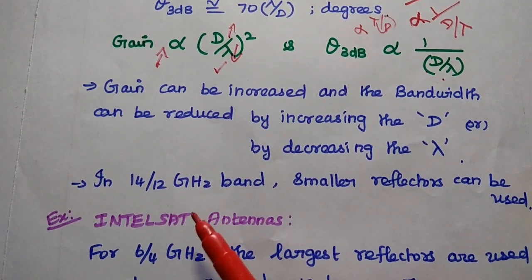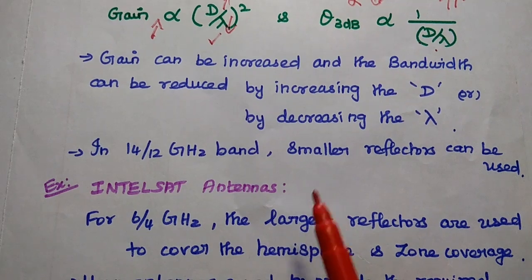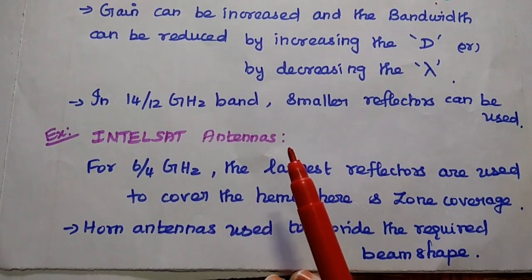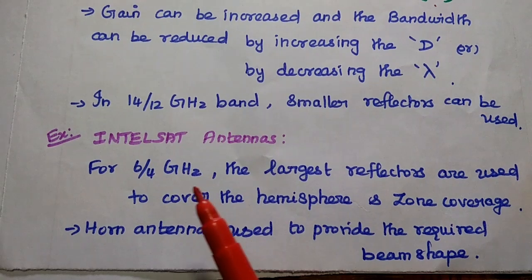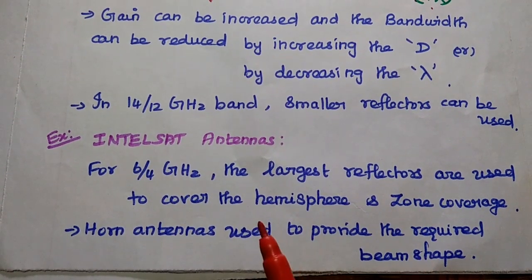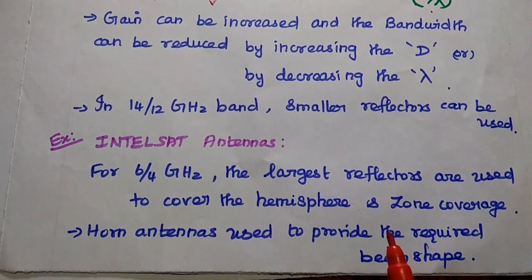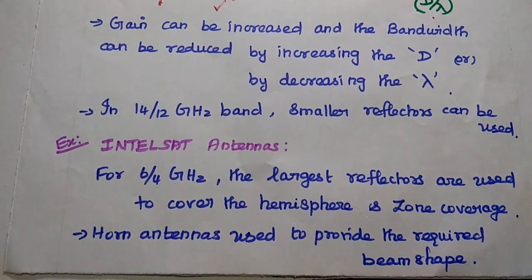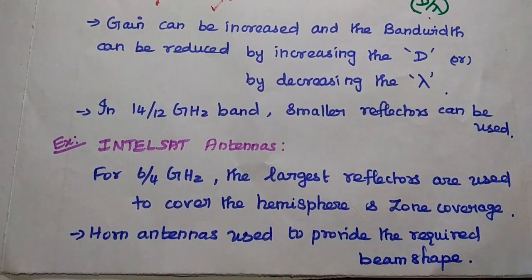In the 14/12 GHz band, smaller reflectors can be used. For the Intelsat antennas operating at 6/4 GHz, the largest reflectors are used to cover the hemisphere as well as zone coverage. Horn antennas are also used to provide the required beam shape.